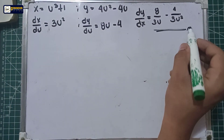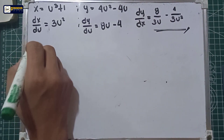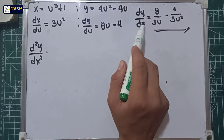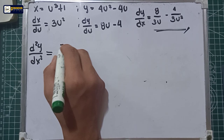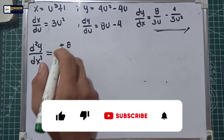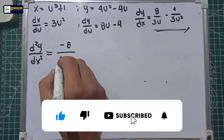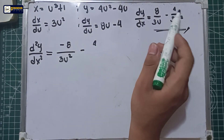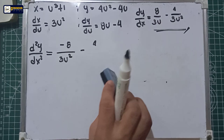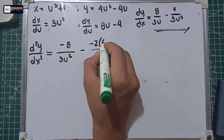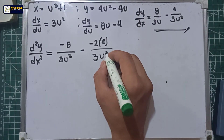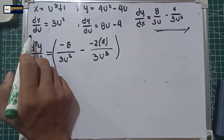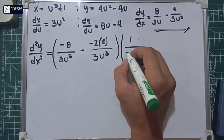For the second derivative, we will use d squared y over dx squared — the derivative of the first derivative. This will give us the derivative of 8 over 3u, which gives us negative 8 over 3u squared, minus the derivative of 4 over 3u squared, which gives us negative 2 multiplied by 4 over 3u raised to the 3rd. Multiply by the inverse of dx over du, which gives us 1 over 3u squared.